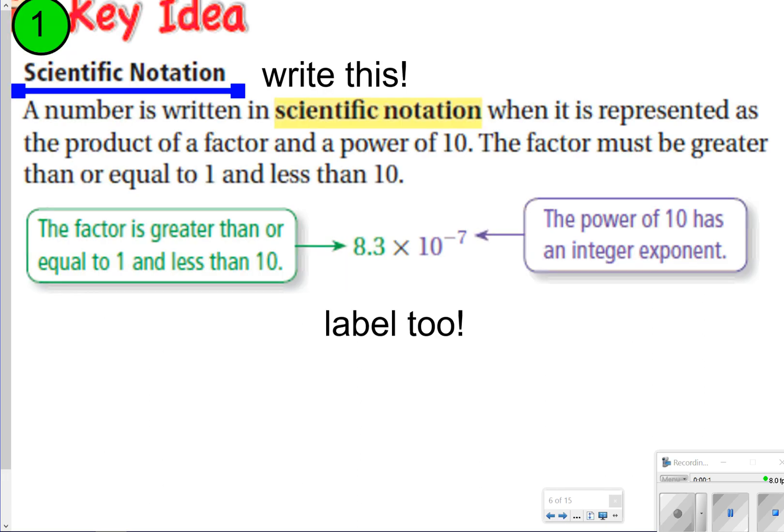The first thing we're going to write down is what is scientific notation, and that's just when a large number or a very small number is basically simplified and written in a different form.